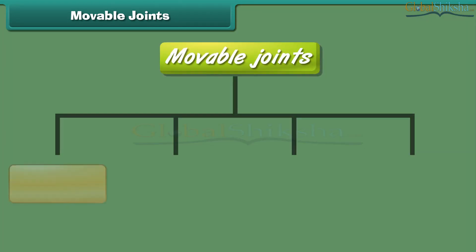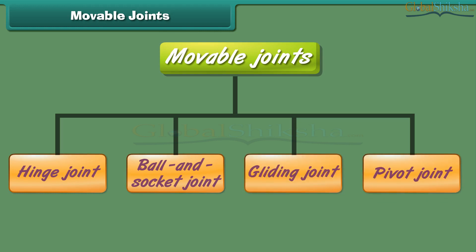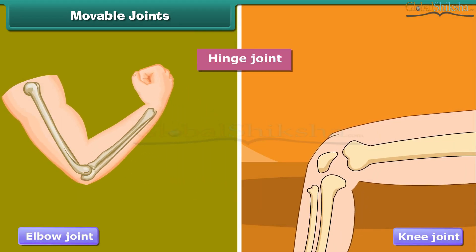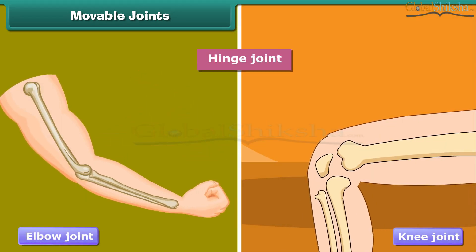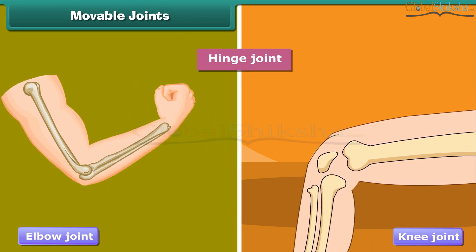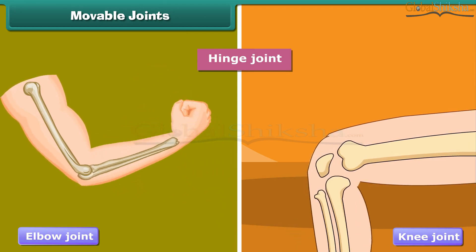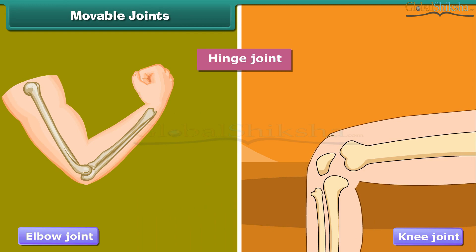Moveable joints are grouped into four types on the basis of movement. Come, let us discuss each type in detail. Hinge joint: these are the joints which can be bent in only one direction. For example, the elbow joint and knee joint.